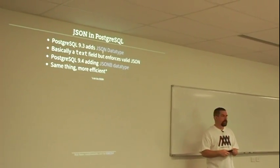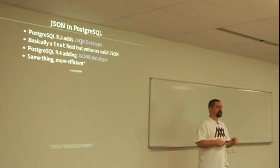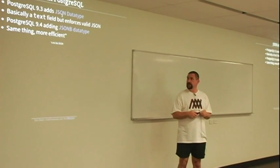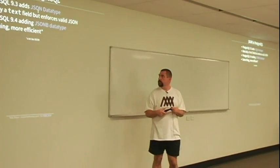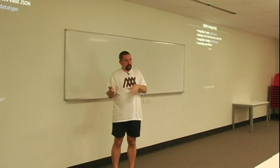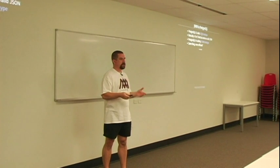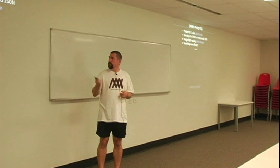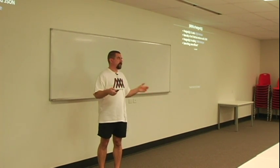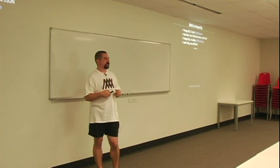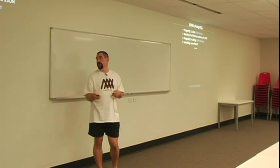Postgres added the JSON data type in 9.3. They've also added a more efficient version called JSONB — a lot like BSON — in 9.4. It's really basically just a text field that checks that whatever you put in it is actually JSON. The JSONB version will be basically the same thing, but more efficient because the underlying Postgres functions will be able to make stronger assumptions about what they'll find there.